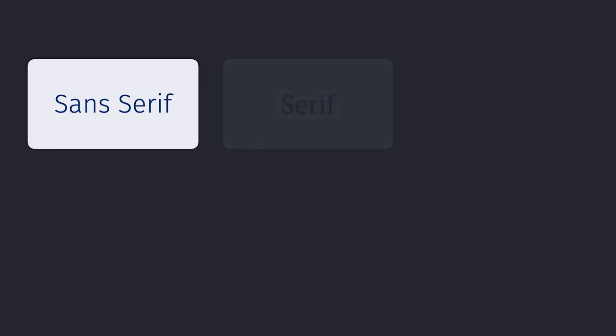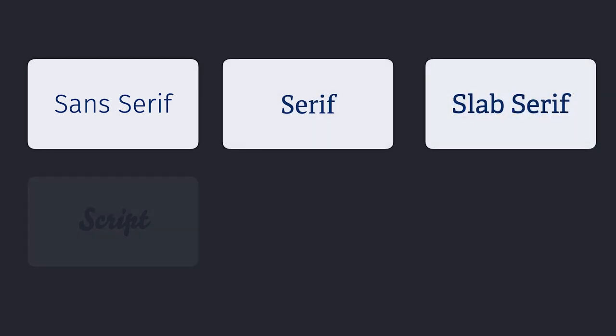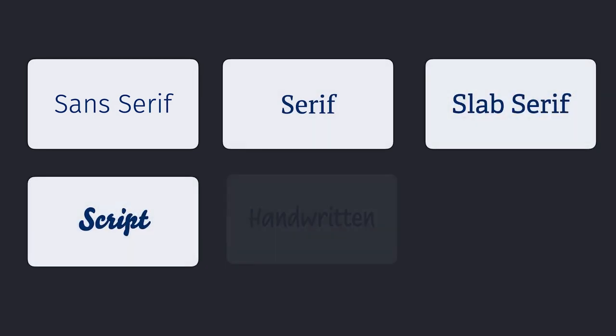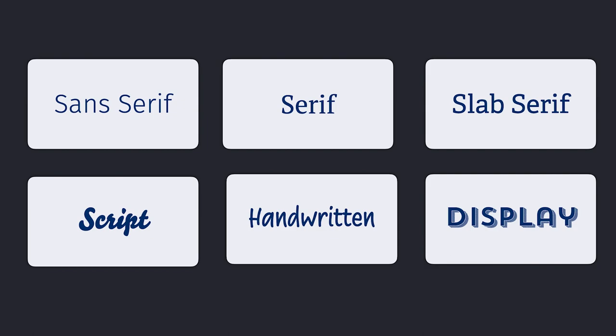There are a lot of ways to categorize typefaces, but it's hard because it's not just a historic or stylistic thing — everything's mixed up. A very broad overview of some kind of categorization is: sans serif, serif, slab serif, script, handwritten, and display — which is, yeah, everything else put in there.